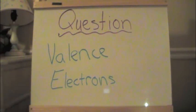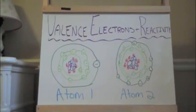But now the question is, why? Valence electrons are the reason elements react with each other. Because as you can see here,